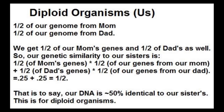Similarly, independent assortment of alleles will also cause half the alleles the sisters inherit from the father to be the same. So in half of the genome inherited through the father, about half will be the same — meaning a quarter of the alleles will be the same through the father. The total relatedness, which we get by adding the proportion of alleles that are the same through the mother and the father, is one-quarter plus one-quarter equals one-half. So in normal diploid organisms, half the genetic information is the same between two sisters.